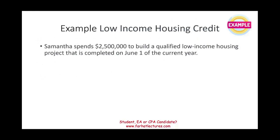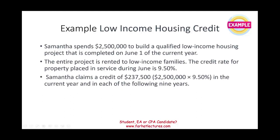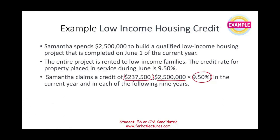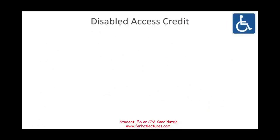For example: Samantha spent $2.5 million to build a low income housing project completed June 1st of the current year. The entire project is rented to low income families, and the credit rate for property placed in service during June is 9.5%. Because she rented 100% of the property, Samantha can claim $2.5 million times 9.5%, a credit of $237,500 in the current year. If Samantha only rented 80% of those units to low income families, the credit would be $2.5 million times 80% times 9.5% — the more units rented, the higher the credit.